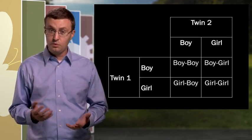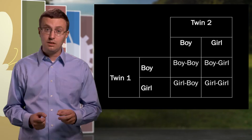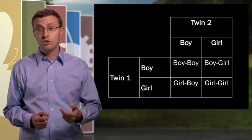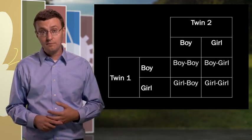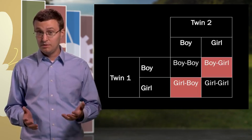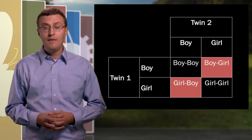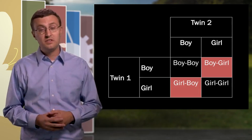Then, putting twin one and twin two together, we have four possible equally likely outcomes: boy-boy, boy-girl, girl-boy, or girl-girl. Each of those outcomes has a 25% chance of occurring, but two of them are grouped together under one boy and one girl. That means that there's a 50% chance of having one of each, thus the results of the simulation.